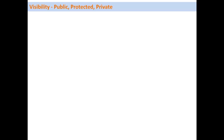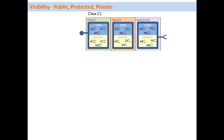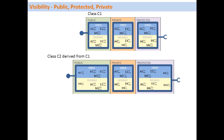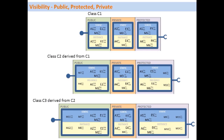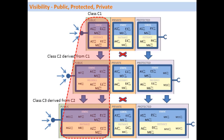Let's look at the different visibility sections in a class: public, protected, and private. Taking classes C1, C2 (derived from C1), and C3 (derived from C2) as an example — the public and protected sections are fully inherited downwards, while the private section is not inherited at all. The public section, as the name suggests, is fully accessible from outside. For all classes — C1, C2, or C3 — it is possible to access the public section from outside.